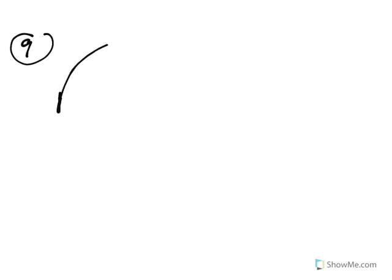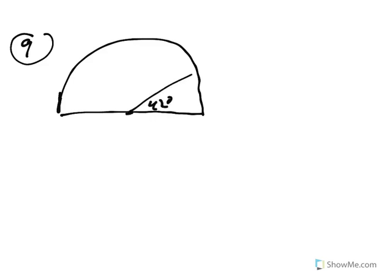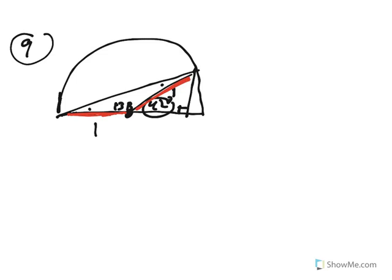Question 9 involves a semicircle with a 42-degree angle and a radius of 1. Since 180 − 42 = 138, the obtuse angle is 138 degrees, and the remaining two angles must sum to 42. Because the triangle is isosceles (two sides are radii), both base angles are 21 degrees each. One part of the question asked for angle EAD, which is 21 degrees.